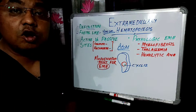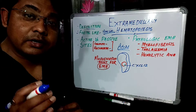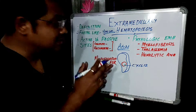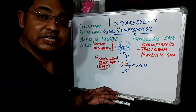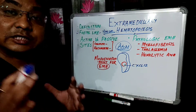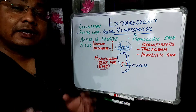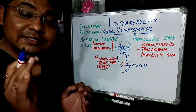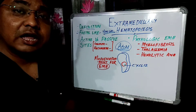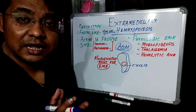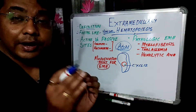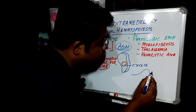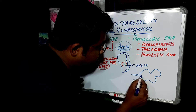The process of hematopoiesis begins in the yolk sac, and after that the definitive elements of blood appear in the AGM region. During the course of gestation, these hematopoietic elements from the AGM region are transported to the liver and spleen, which become the primary sites for hematopoiesis during fetal life. After six months of gestational age, these hematopoietic elements are gradually transported to the bone marrow.